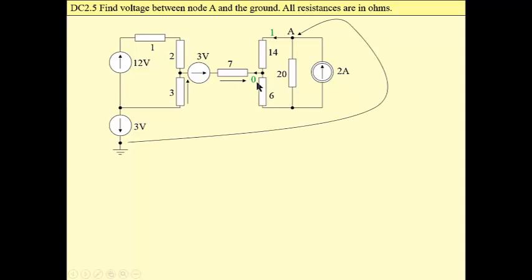If the current is zero, then at the right side we have a current divider. 14 plus 6 gives 20, in parallel with 20, then the current that flows through this branch is half of this current, which is 1A.